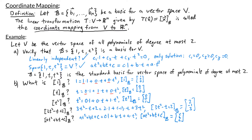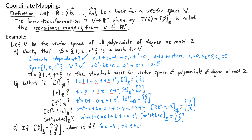We can also convert from a column vector back to a polynomial. In part c, we're told that the b-coordinate vector for x is [−5, 3, 2], and we're asked to find the polynomial x. If I know the b-coordinates, then x = −5·(1) + 3·t + 2·t². So x is the polynomial 2t² + 3t − 5.